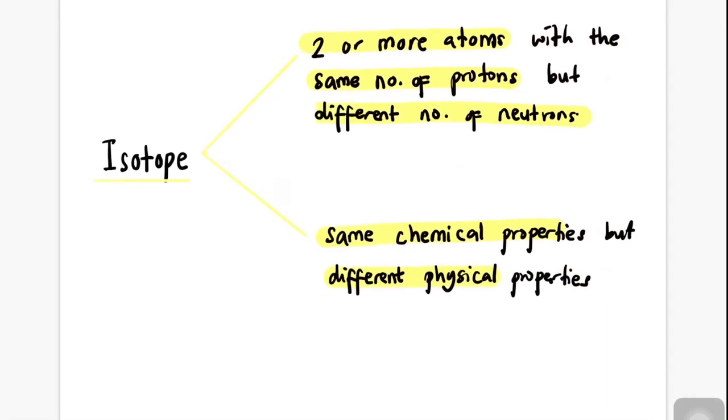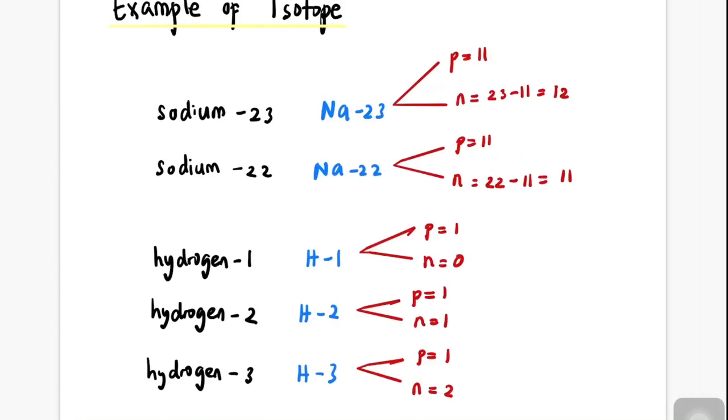Isotopes are two or more atoms with the same number of protons but different numbers of neutrons. They have the same chemical properties but different physical properties. Let's have a look at examples of isotopes.